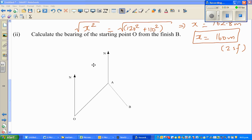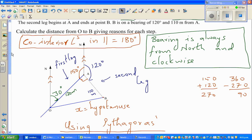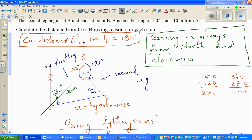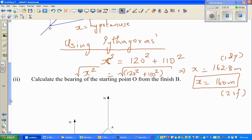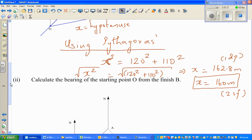Hopefully you have done this question by now. The question is calculate the bearing of the starting point O from point B. This is where we started. We have to find the distance OB. This was given: OA is 120 and this is also given which is 110 meters. We figured out that this is a right angle triangle and then we use Pythagoras to find OB which is 160 in 2 significant figures.